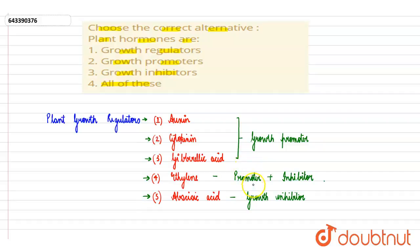Ethylene is promoter as well as inhibitor, and abscisic acid is a growth inhibitor. That means the plant hormones can be known as plant growth regulators. They are growth promoters as well and they are growth inhibitors.